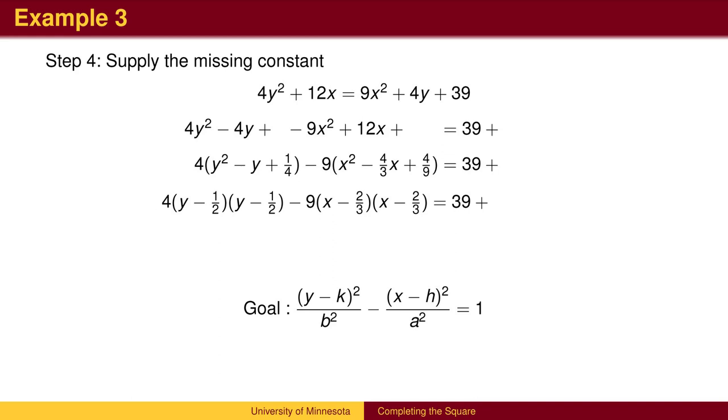We then multiply to supply the missing constants 1 fourth and 4 ninths, which are then multiplied by the leading coefficients, giving us 1 and negative 4 to be added to the left side. We can then write the equation in standard form.